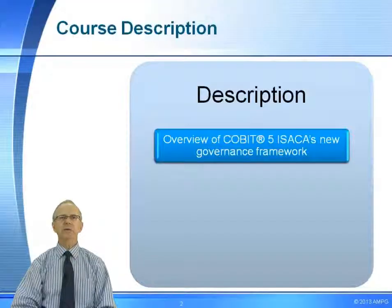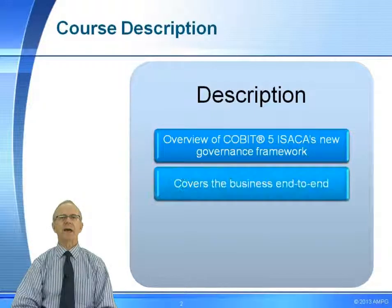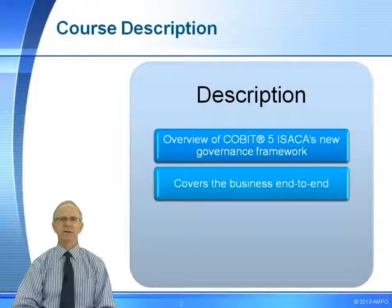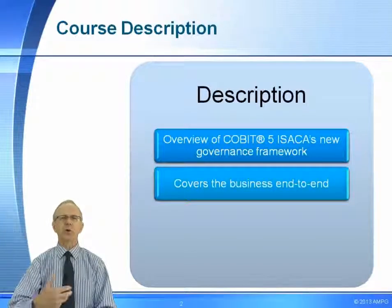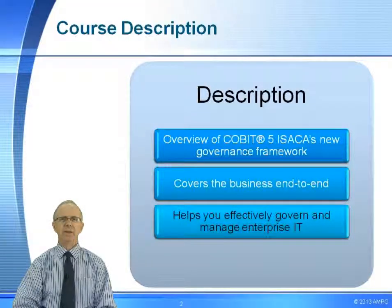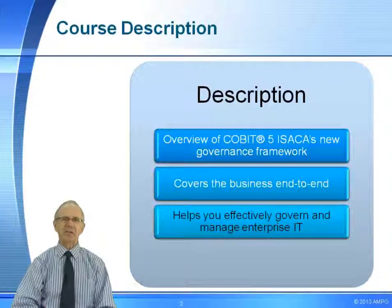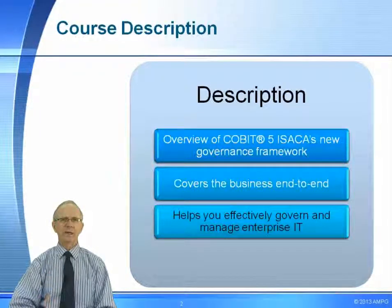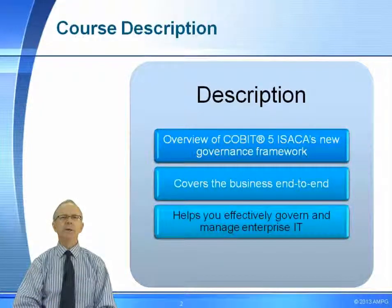What we'll go through in this course is an overview of ISACA's new governance framework COBIT-5. COBIT-5 covers the business end to end — it's more than just enterprise IT. It's about the business from the stakeholder down through the business and into IT, all working in a common direction, with a framework so we all understand our individual roles to effectively govern and manage IT, ensuring stakeholders, business, and IT all work together.